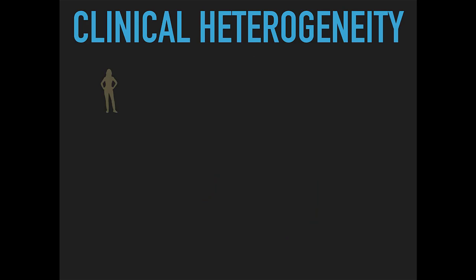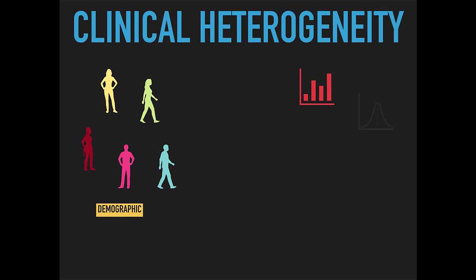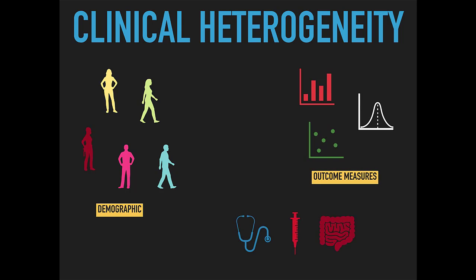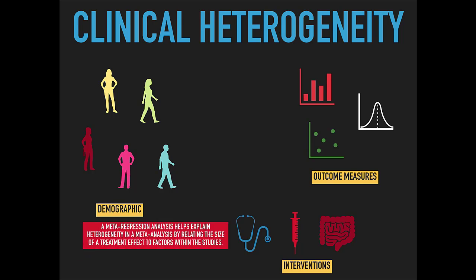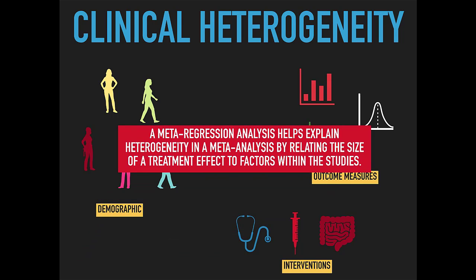Clinical heterogeneity refers to when individuals, interventions, or outcomes chosen in studies differ from one another significantly, making the results of these studies difficult to compare. Clinical heterogeneity can be determined visually using a forest plot, or statistically using the I-squared statistic. A meta-regression analysis helps to explain heterogeneity in a meta-analysis by relating the size of a treatment effect to factors within the study.